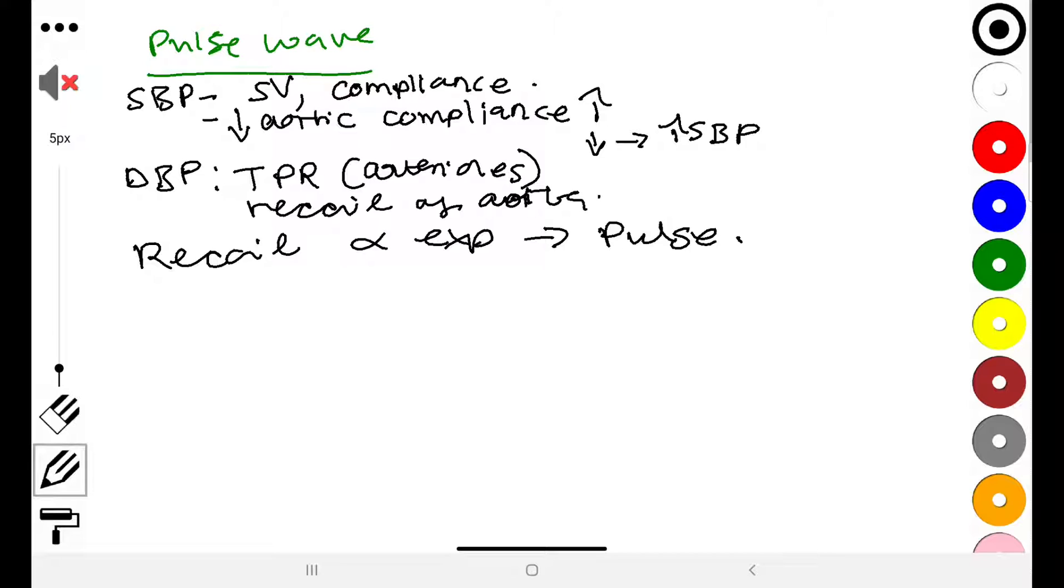Maybe one more thing before we end the video that I would like you to appreciate is that pulse pressure itself is defined as the difference between systolic and diastolic. We've already established that. And within this area, this is where we appreciate the mean arterial pressure. Do not forget how it differs from the other systemic pressure that we talked about.